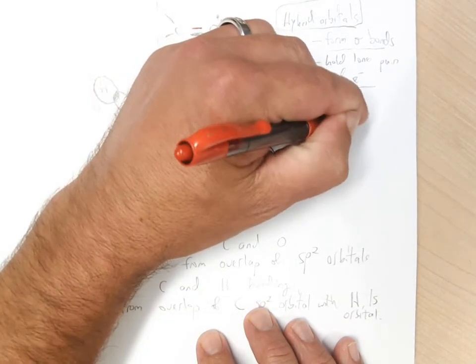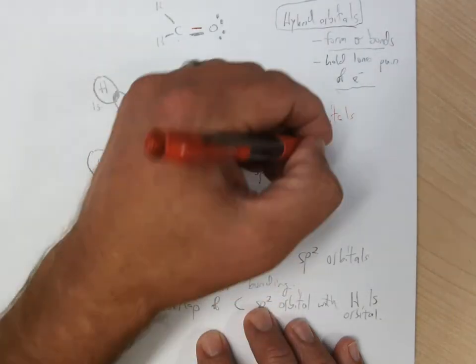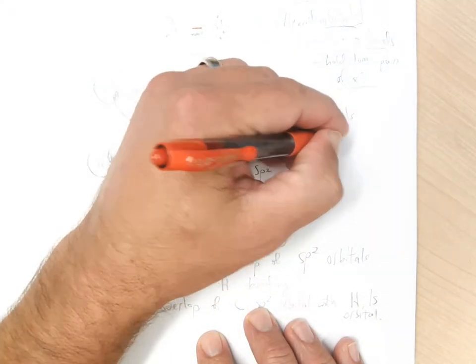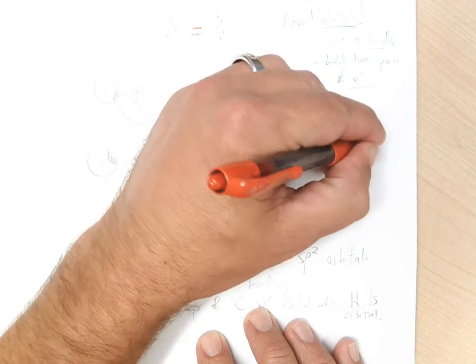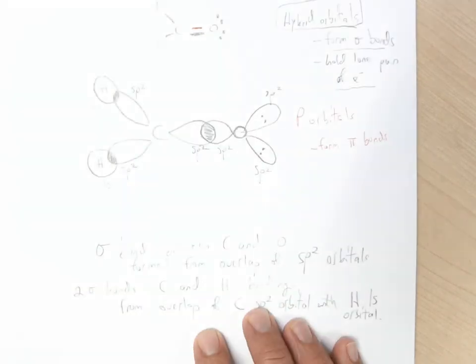that are unhybridized, p-orbitals that are unhybridized, can form the pi bonds, which are going to be the multiple bonds.